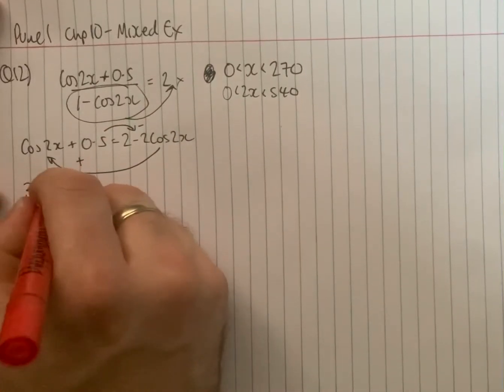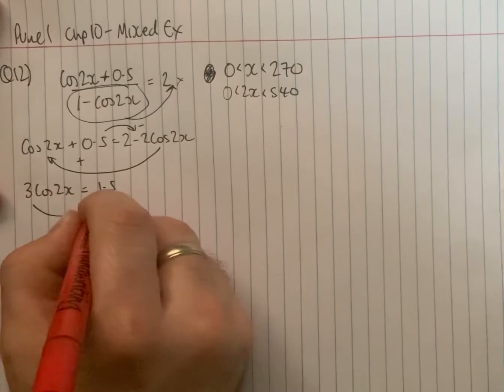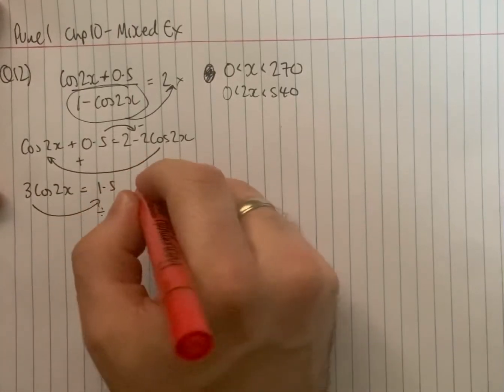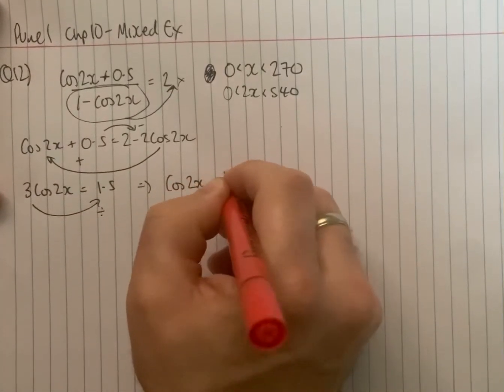We get 3 cos 2x equals 1.5. That comes out as a divide, giving us cos 2x equals 1 half.